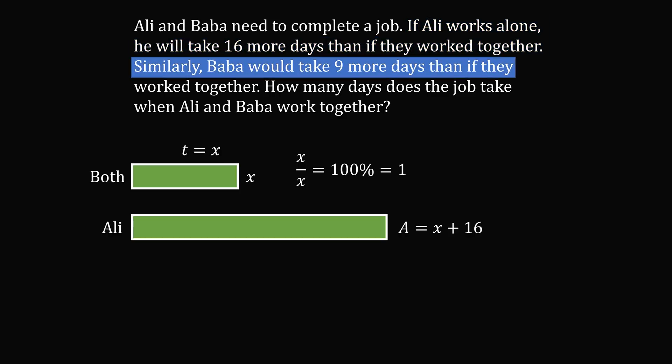Similarly, Baba would take nine more days than if they work together. So if Baba completes the job by himself in b days, we know that b is equal to x plus nine.